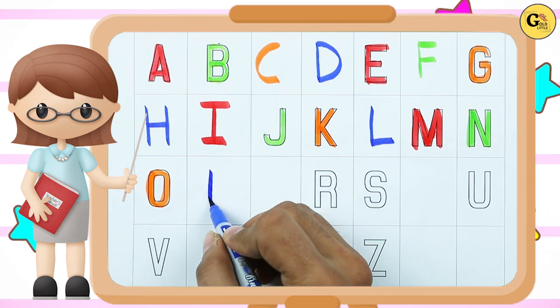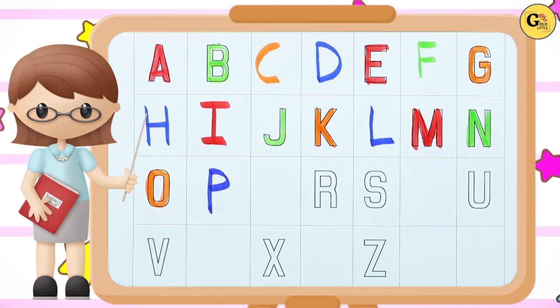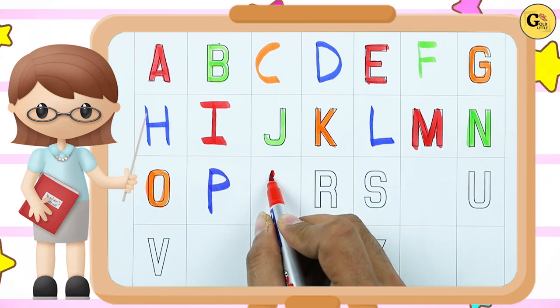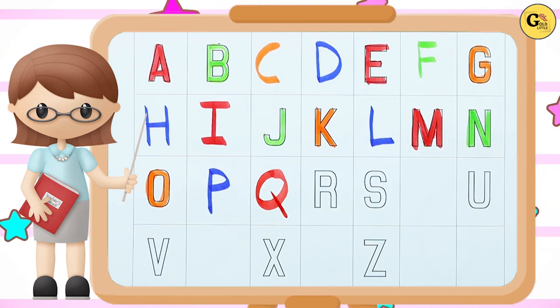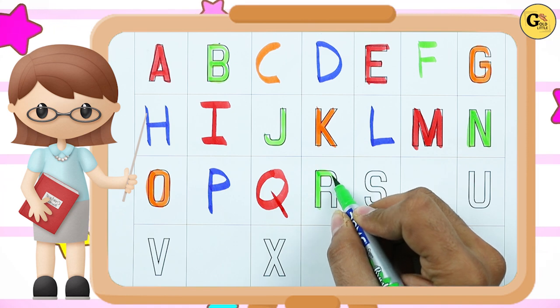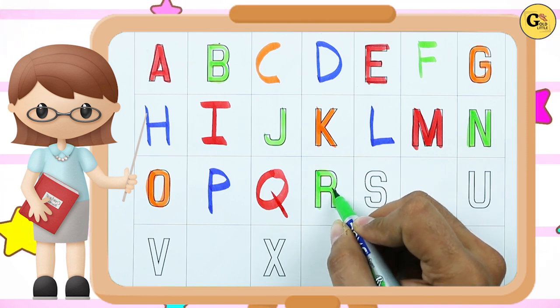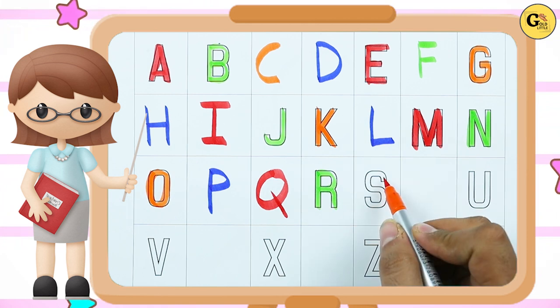What next? Tell me. Yes, it's P. P for parrot. What next? Tell me. Q. Q for queen. Next is R. R for rabbit with green color.